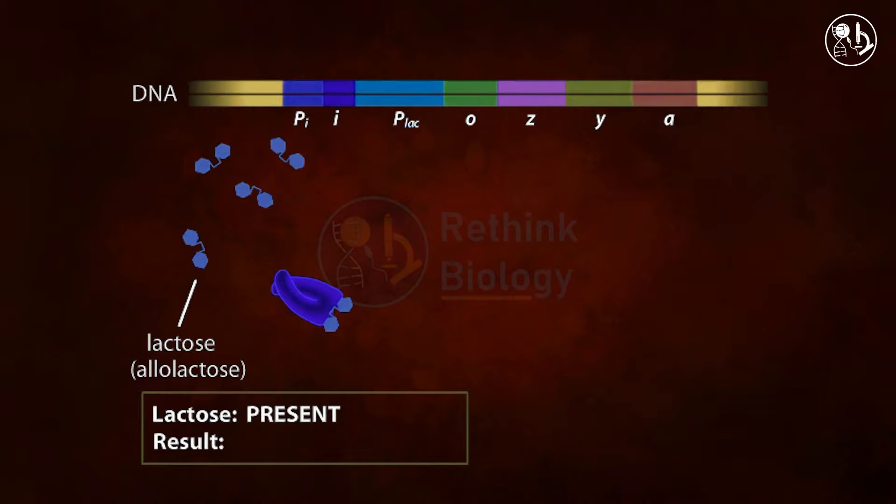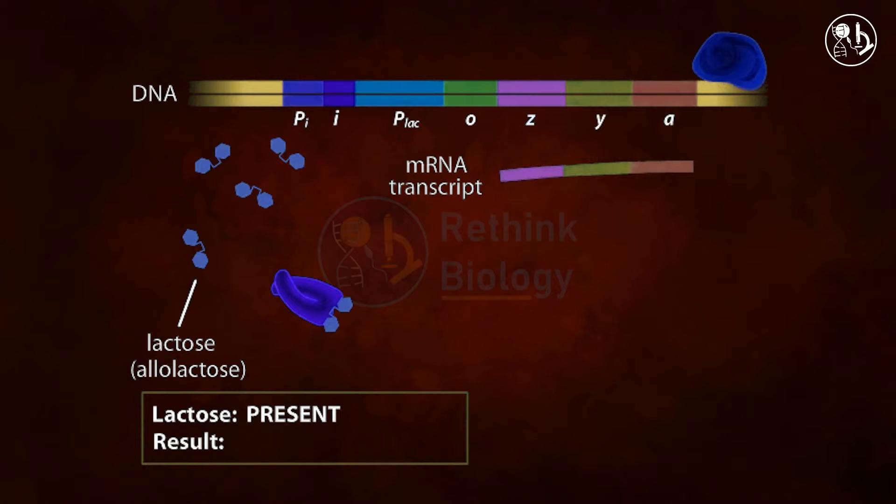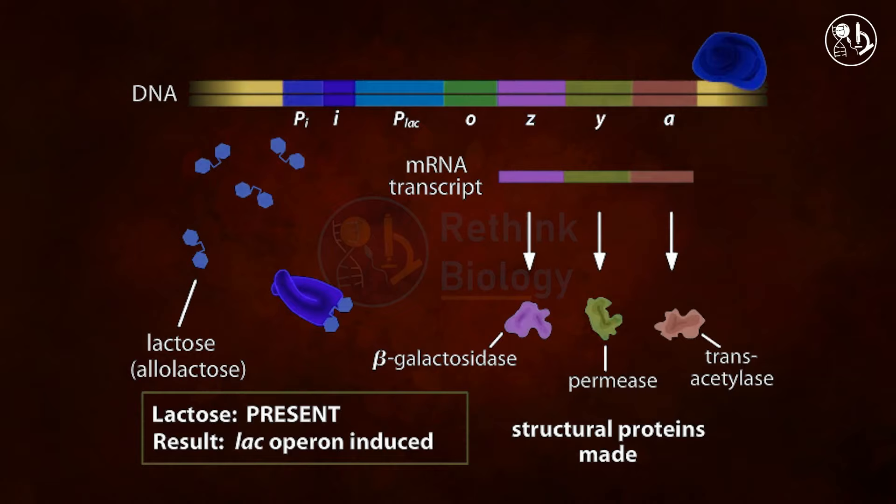Without the repressor inhibiting it, RNA polymerase is able to transcribe the structural genes. The lac structural genes are thus expressed in the presence of lactose, producing the proteins needed for lactose metabolism, encoded by the Z and Y genes.